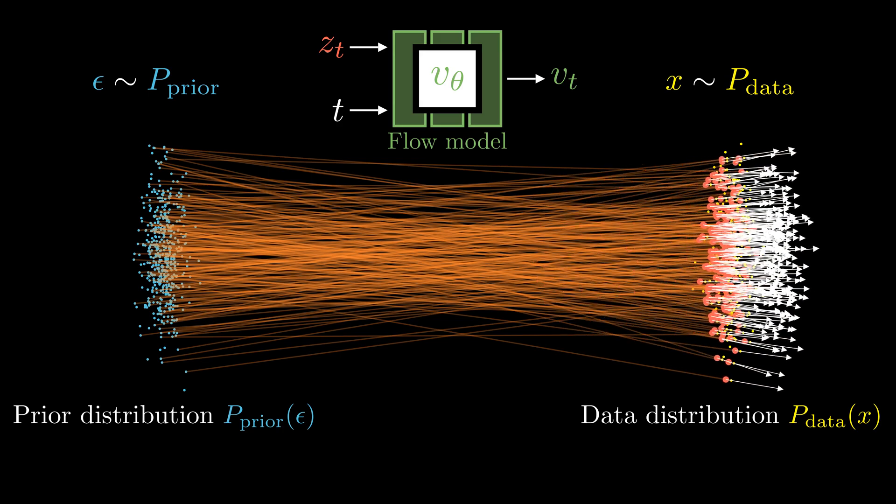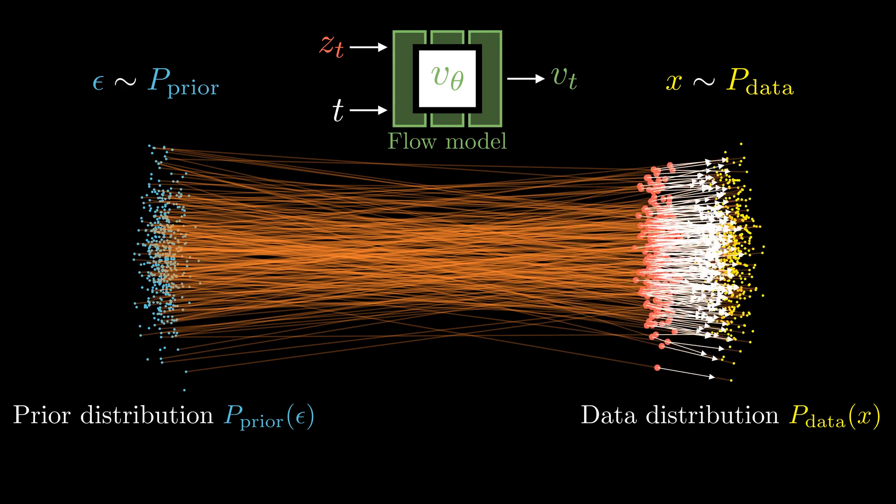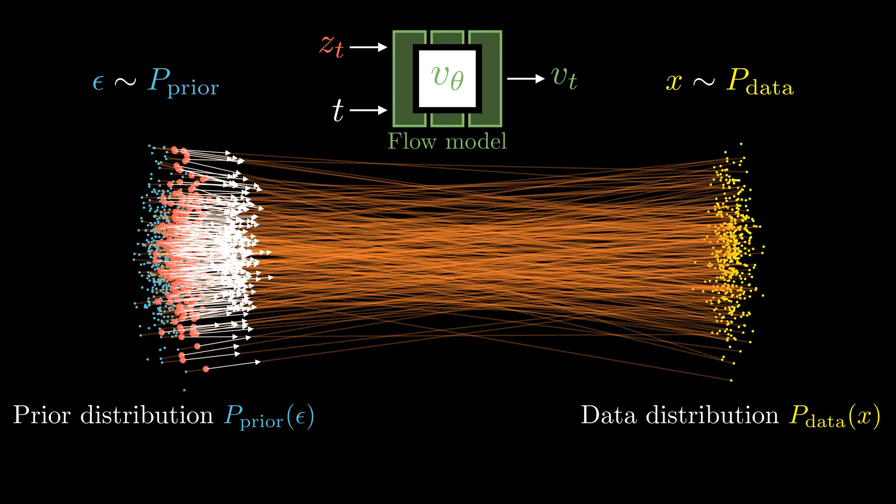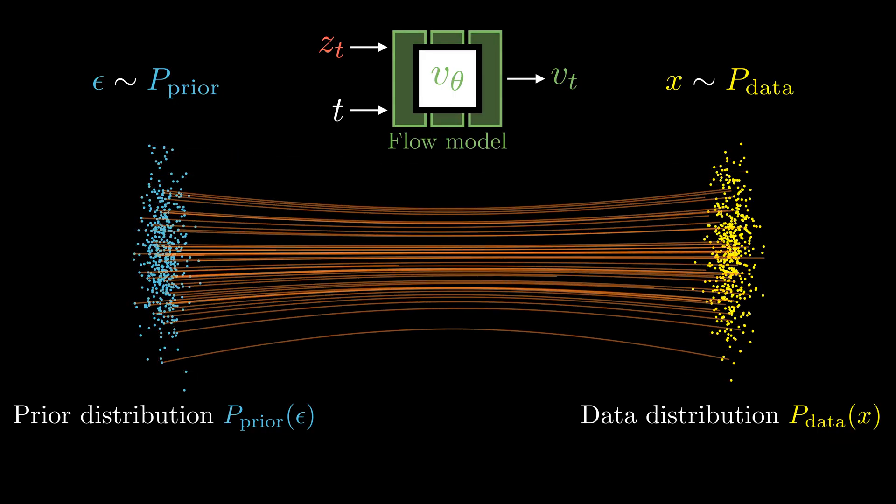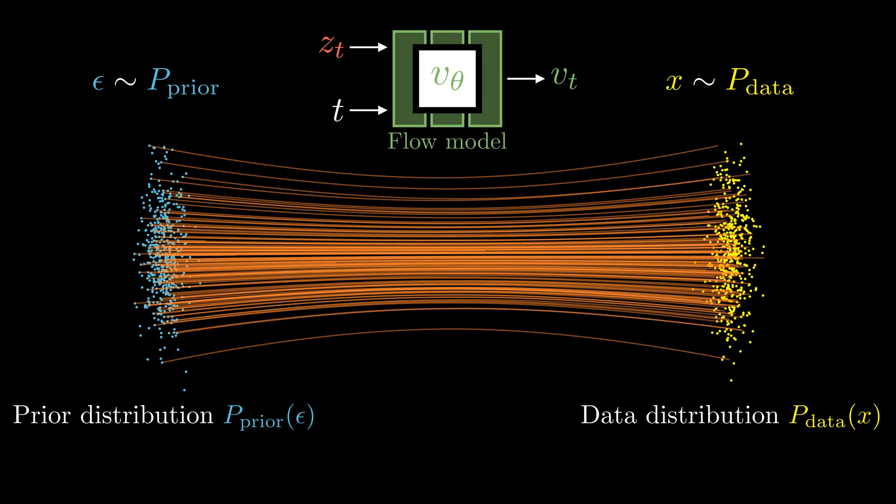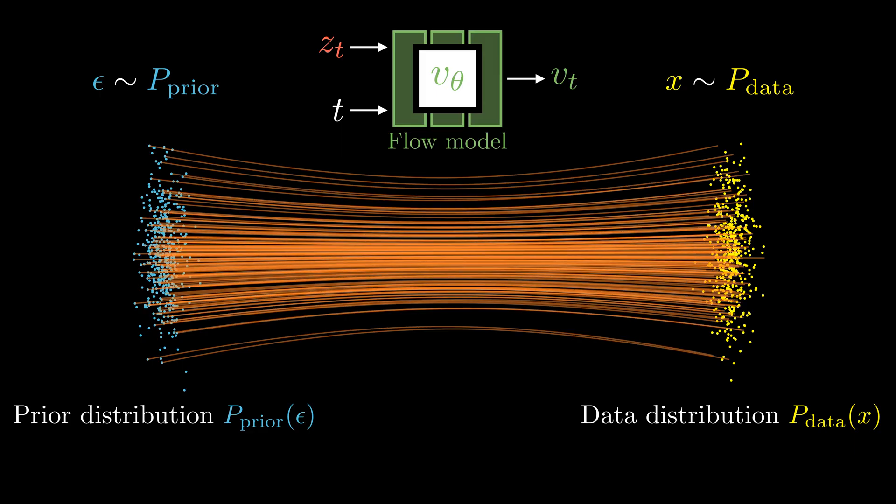At a given point zt, we may have multiple conditional velocity vt arising from different sample pairs of epsilon and x. But in expectation over all these pairs, the flow model is trained to match the marginal velocity field.